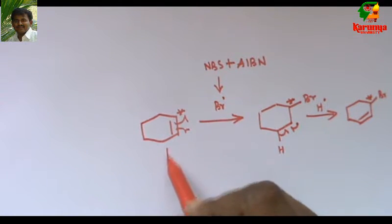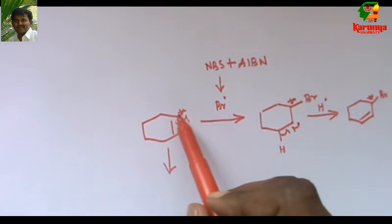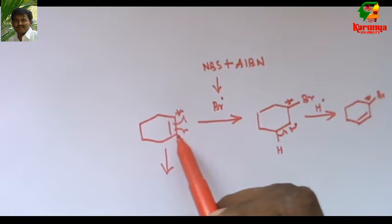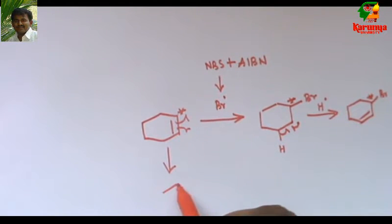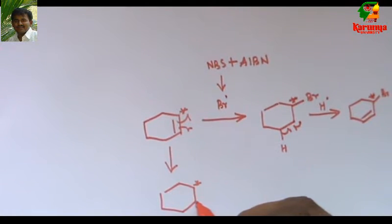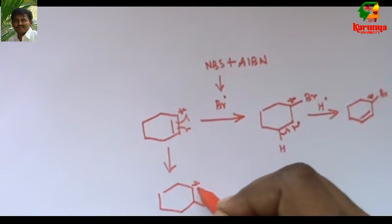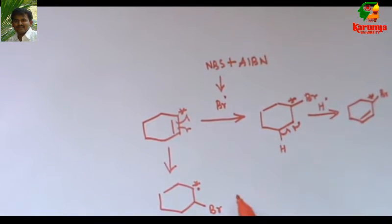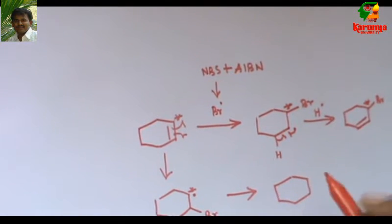There is one more possibility also. Instead of this carbon, this carbon also may add to the bromine radical to give Br here and radical here. This can lead to another product.